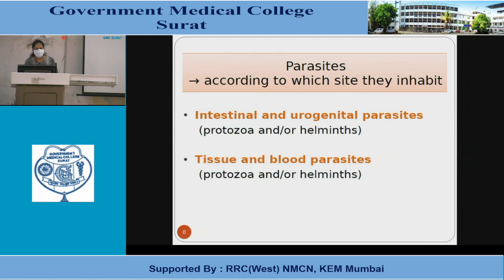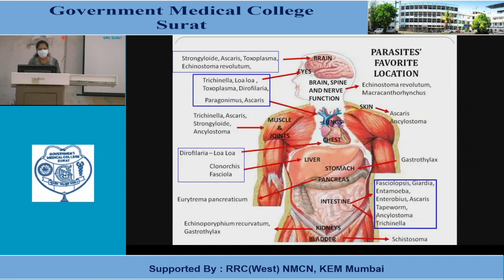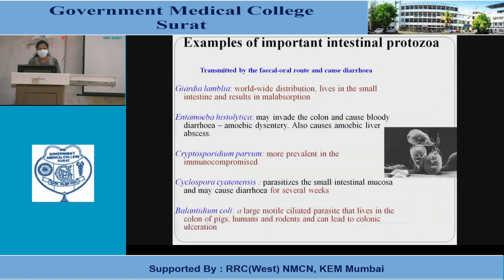Parasites can be classified according to which site they inhabit, such as intestinal and urogenital parasites, and tissue and blood parasites. In the figure, various names of parasites are given which inhabit various body systems.